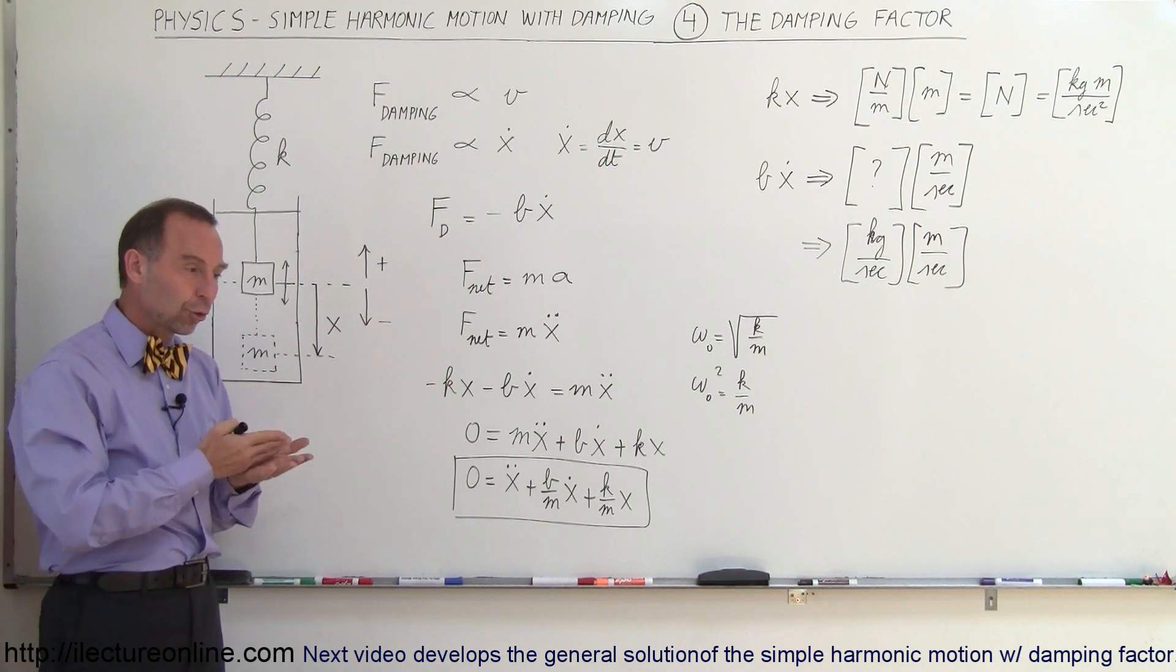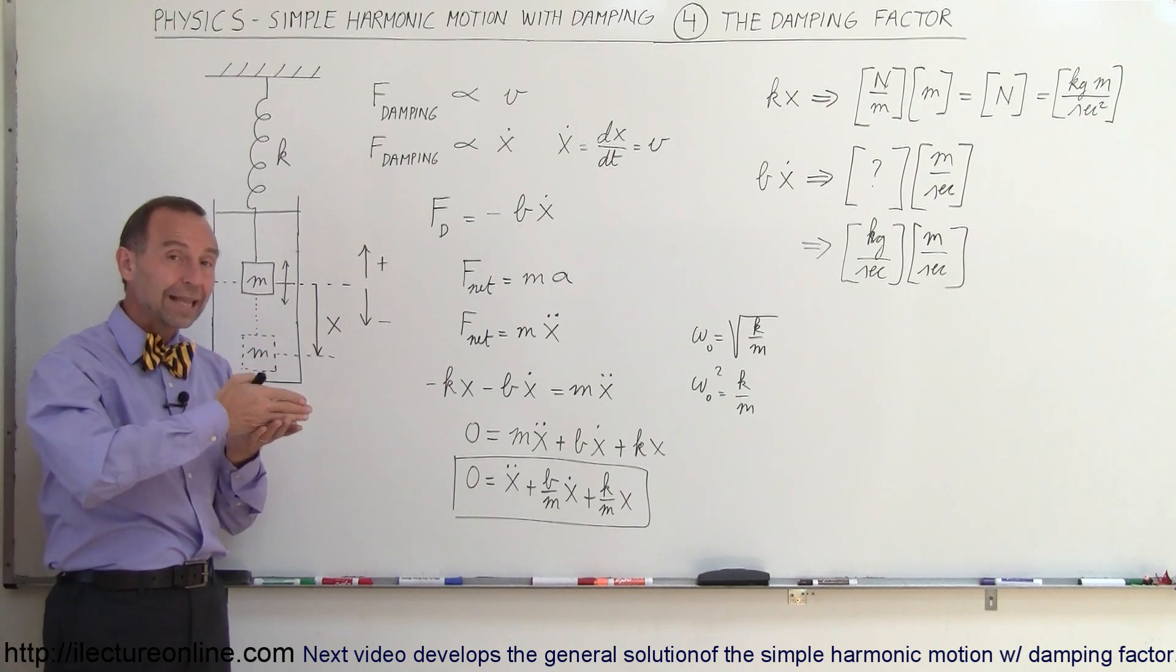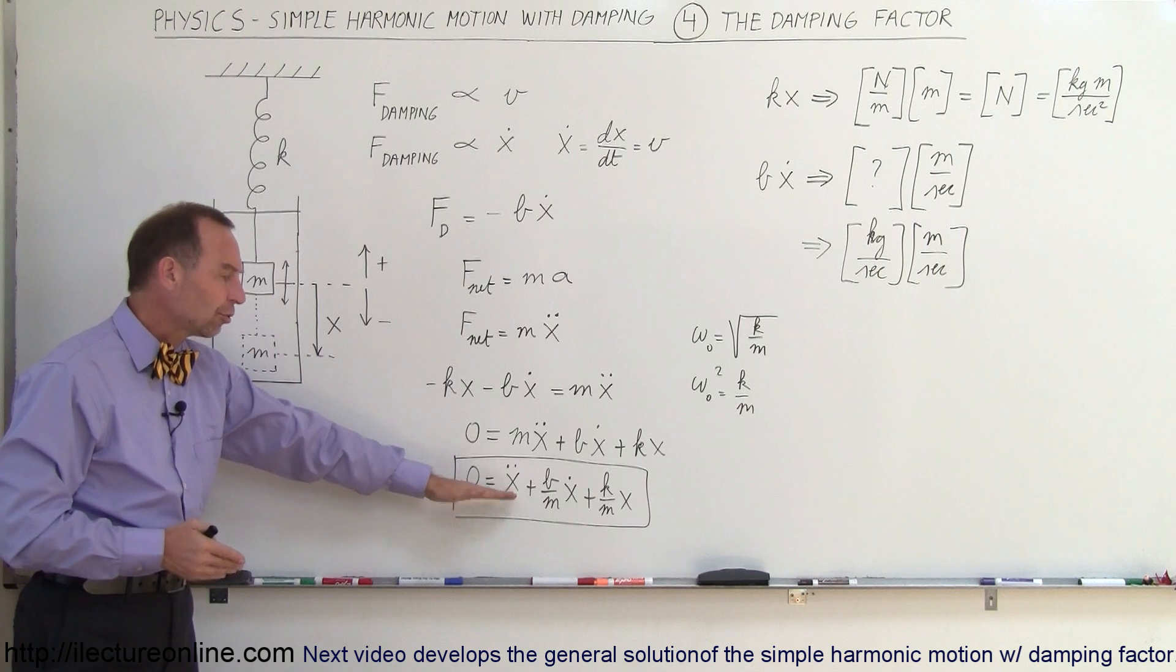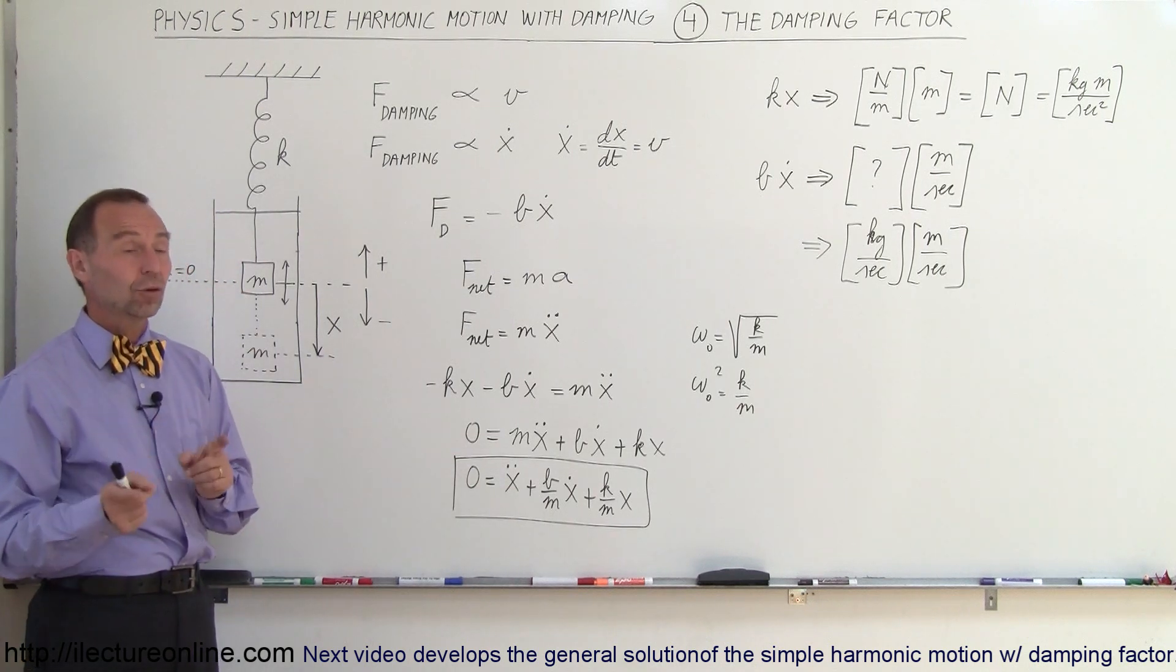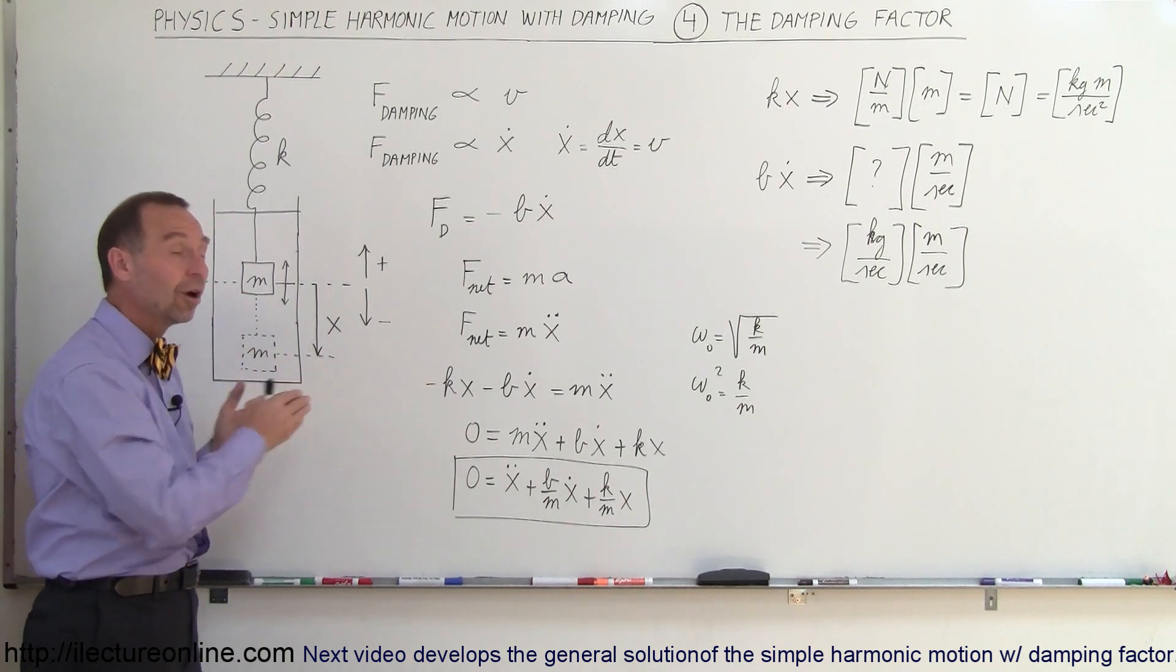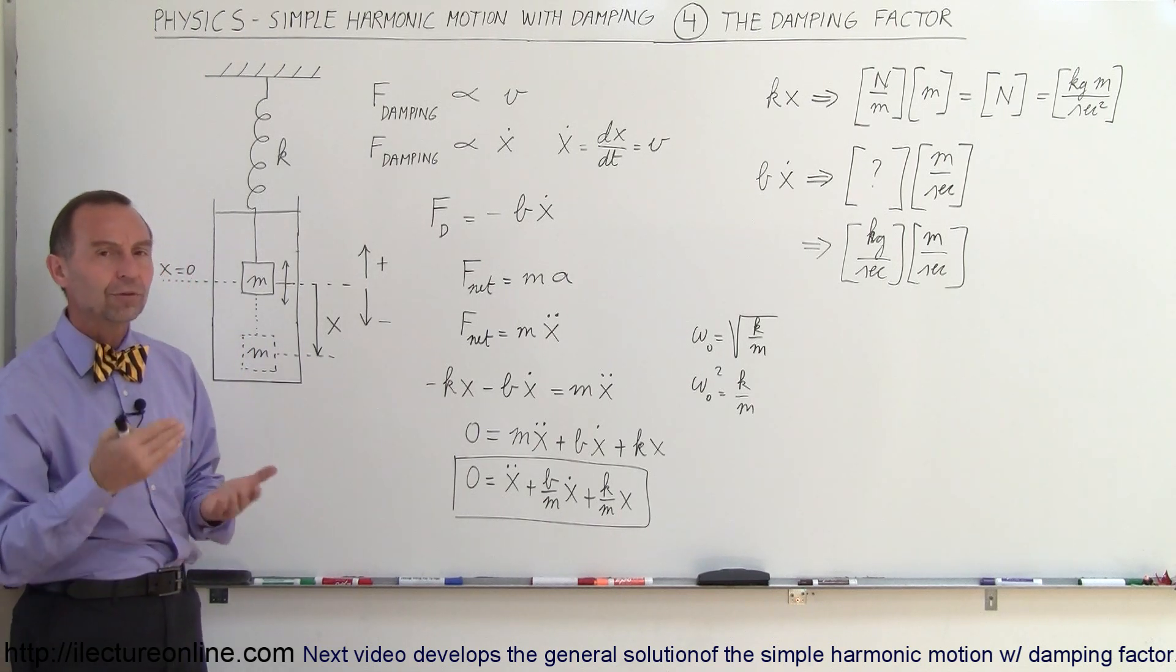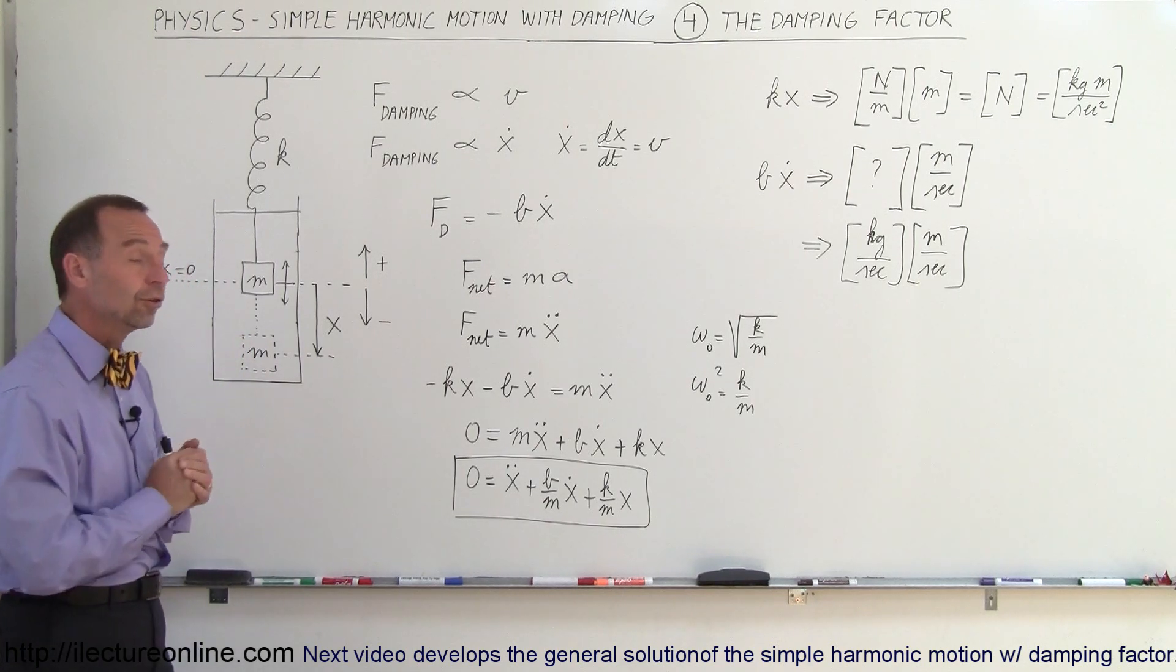So those are the three cases of oscillatory motion with damping: overdamping, underdamping, and critical damping that we'll have to talk about when we solve this general equation. In the next several videos, first we'll solve the equation, and then we'll look at the various cases of underdamping, overdamping, and critical damping using that equation. Thank you.